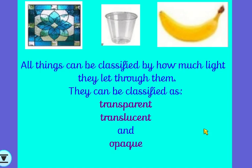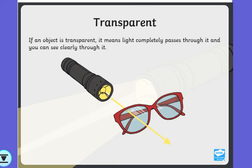All things can be classified by how much light they let through them. They can be classified as transparent, translucent, and opaque — three very important words this week. If something is transparent, it means that light can pass completely through it and you can see clearly through it. The example given here is a pair of glasses. If you shone a torch through a pair of glasses, you would see all of the light come straight through — that is transparent.